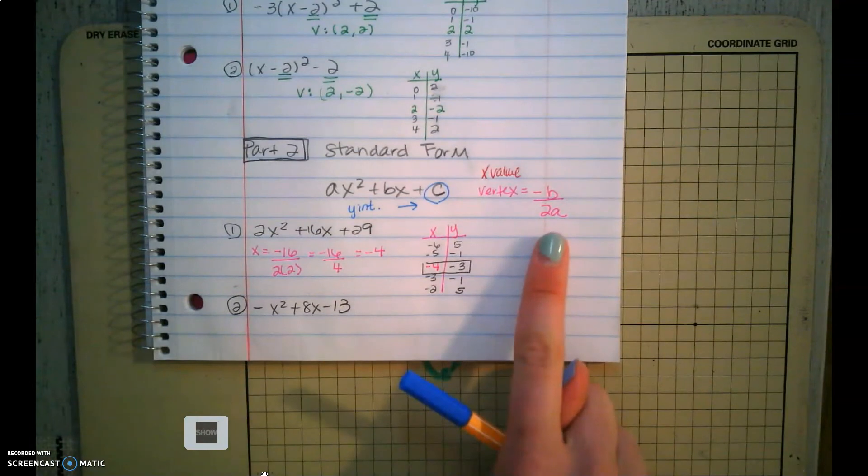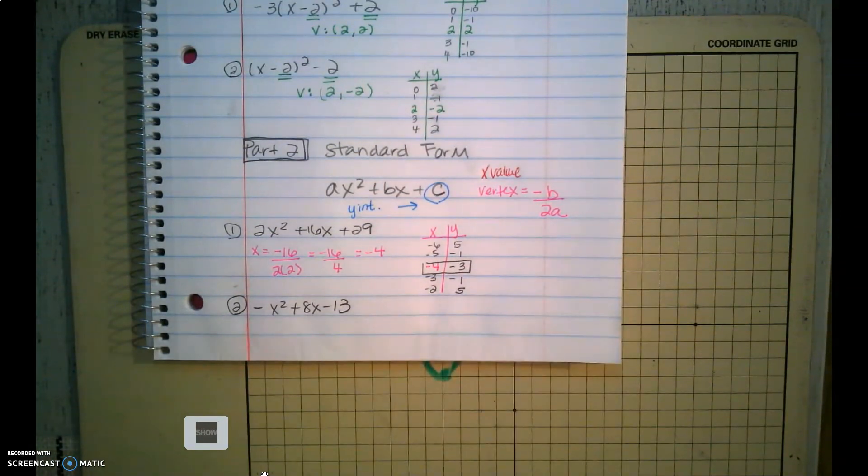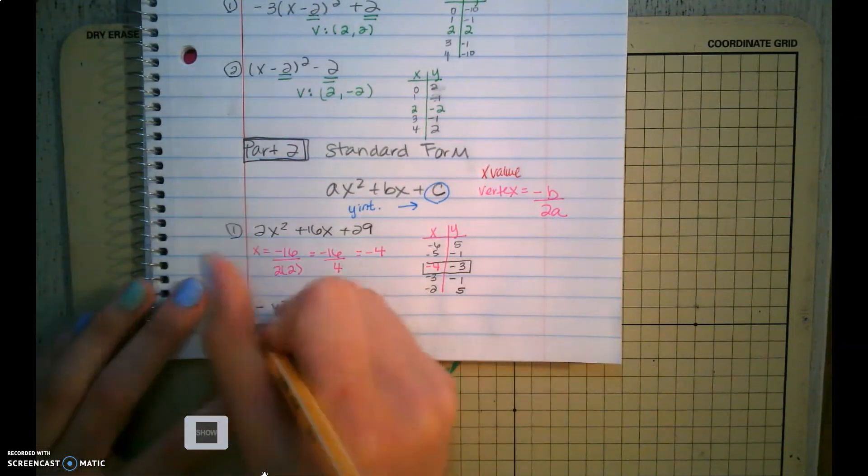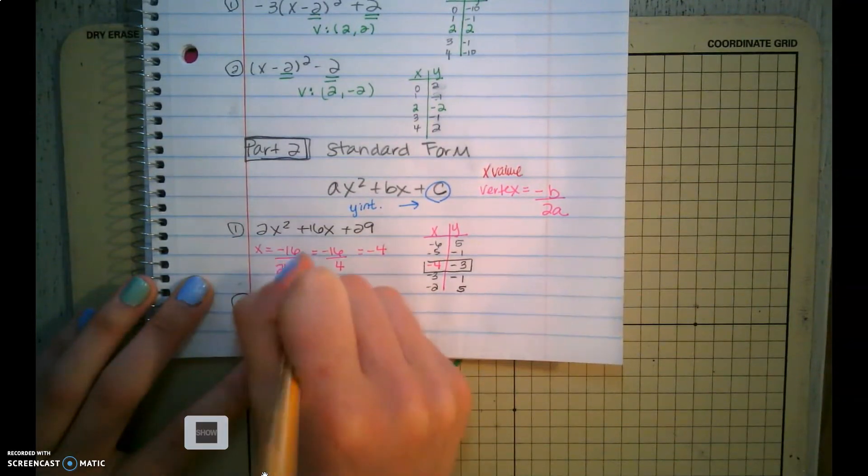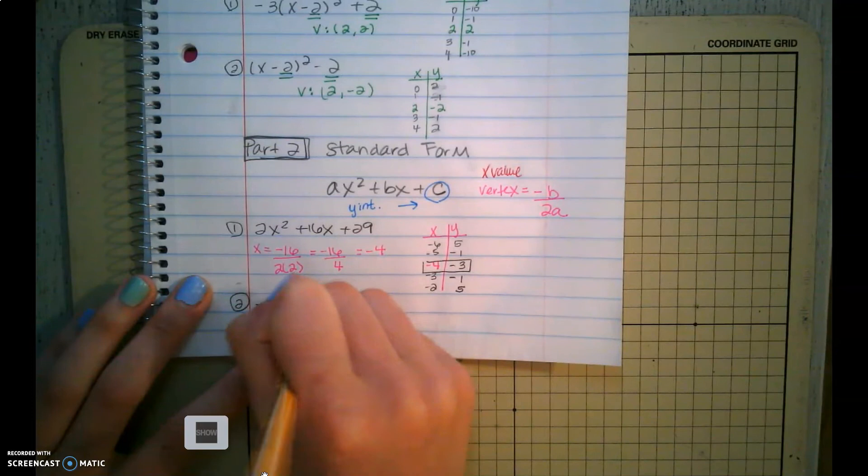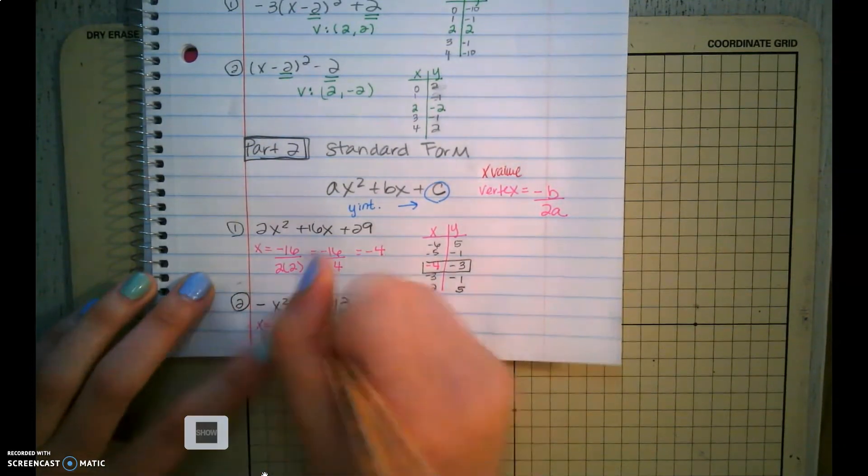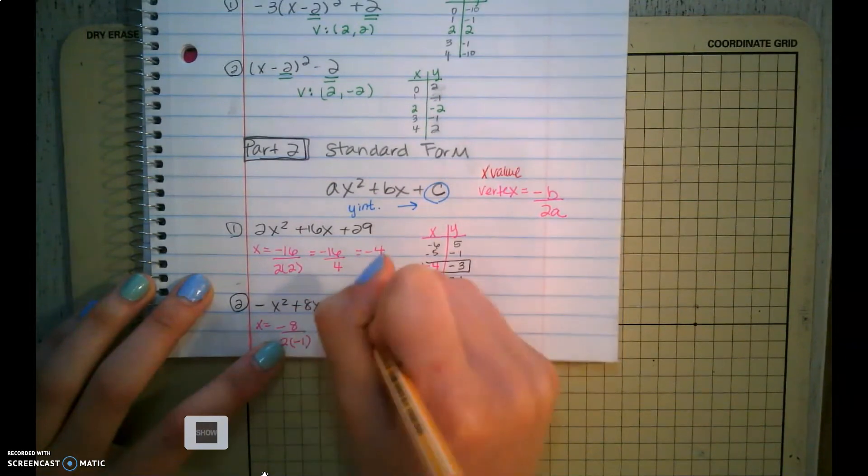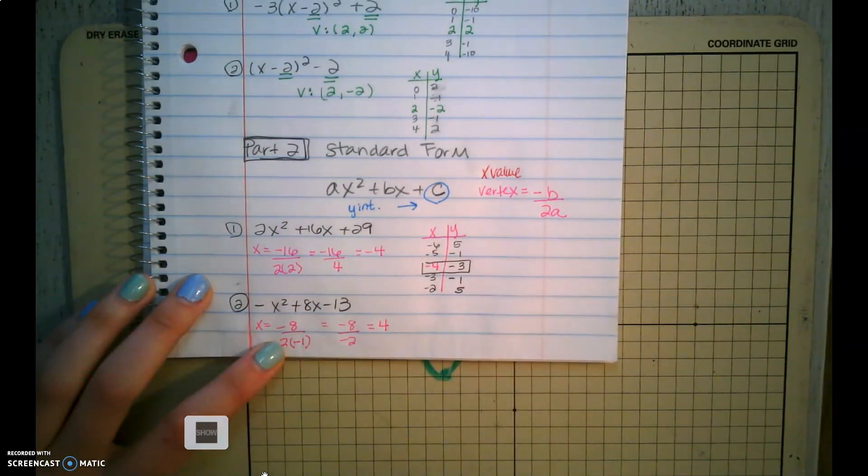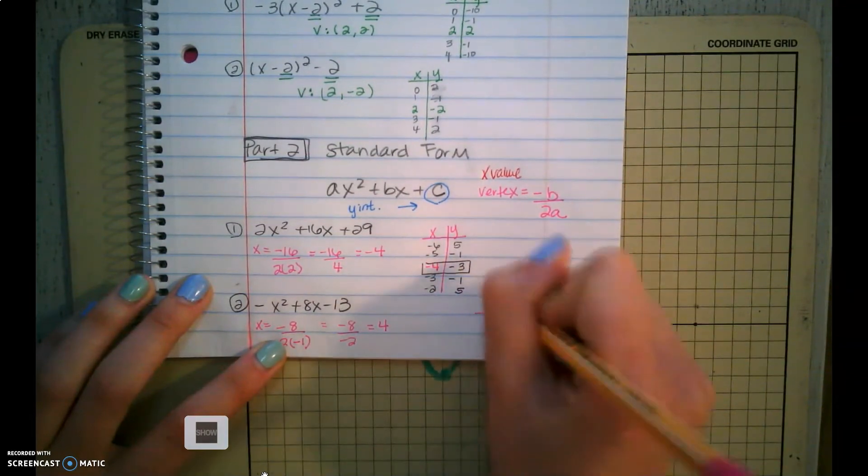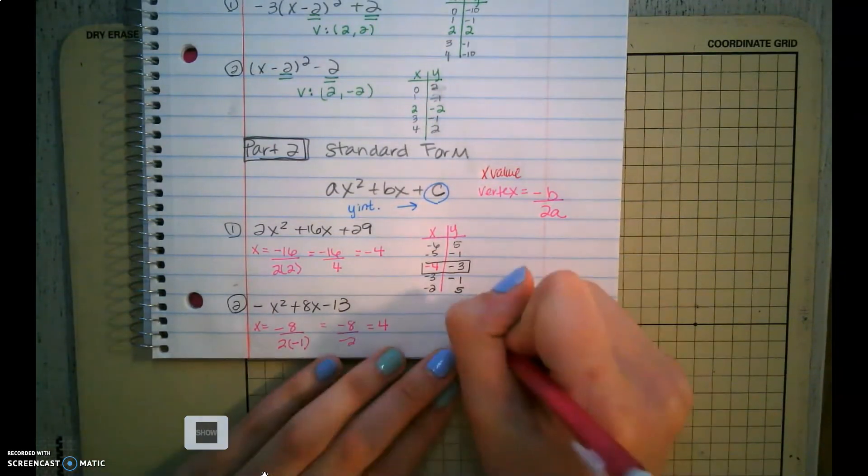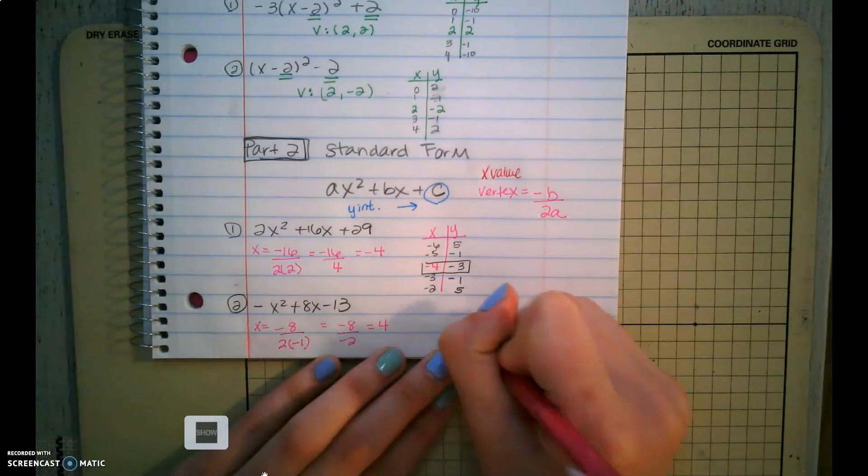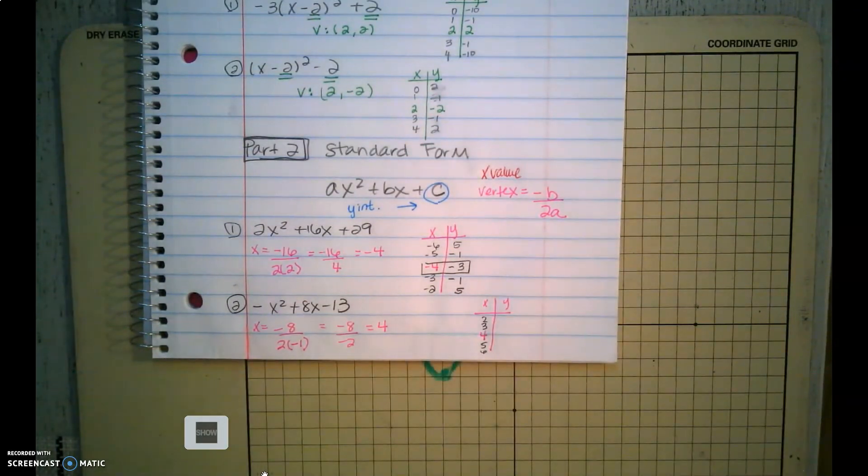Let's do one more standard form. Again, we're going to have to find the vertex, so we're going to have to use this vertex equation. So we're going to do x equals the opposite of b, the opposite of a positive 8 is negative 8, all over 2 times a, negative 1, because that a value is negative. This is negative 8 over negative 2, which gives us a positive 4. So again, I'm going to create a little table of values here and I'm going to put 4 in the middle. My vertex is always in the middle, two points that come before it, two points that come after it.